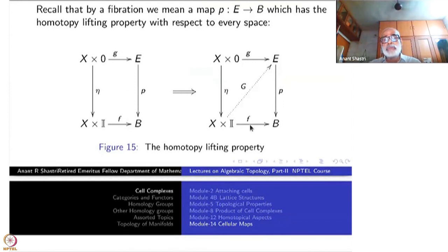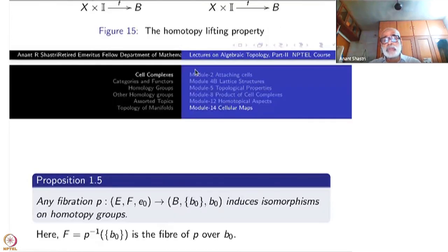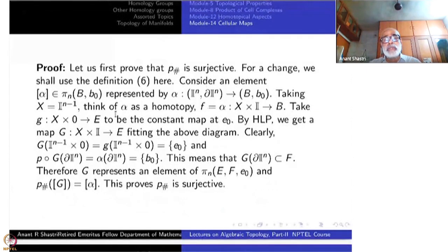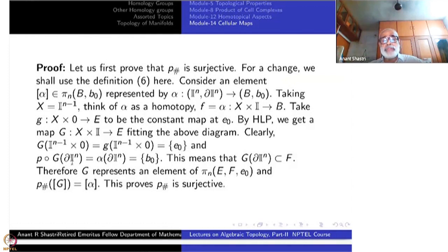We must have a map from I^{n-1} to E, but that is easy here because this particular F, namely alpha, takes the entire boundary to a single point. So I can take I^{n-1} cross 0, which is X cross 0, go to the single point E_0, and then p of that will be B_0, making the diagram commutative. Applying the homotopy lifting property gives a map capital G. G of boundary of I^n is contained in the fiber F, since p of the boundary is the single point B_0.